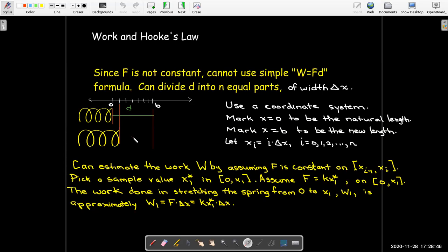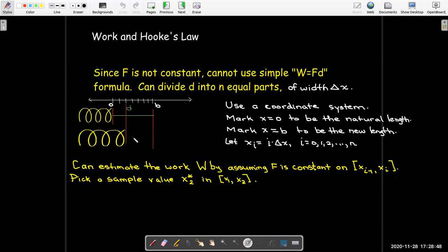Well, I can repeat that for my next interval. Somewhere between x sub 1 and x sub 2, I'll pick some x value. And I'll assume that the force is constant from x sub 1 to x sub 2, and that constant value is found by taking x sub 2 star and multiplying it by k.